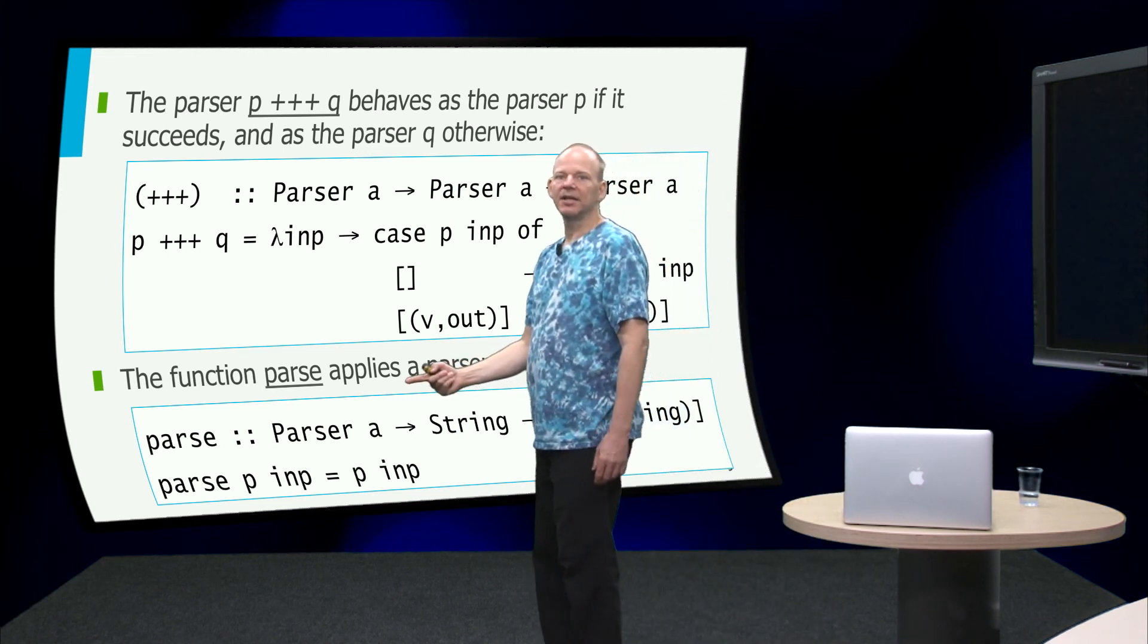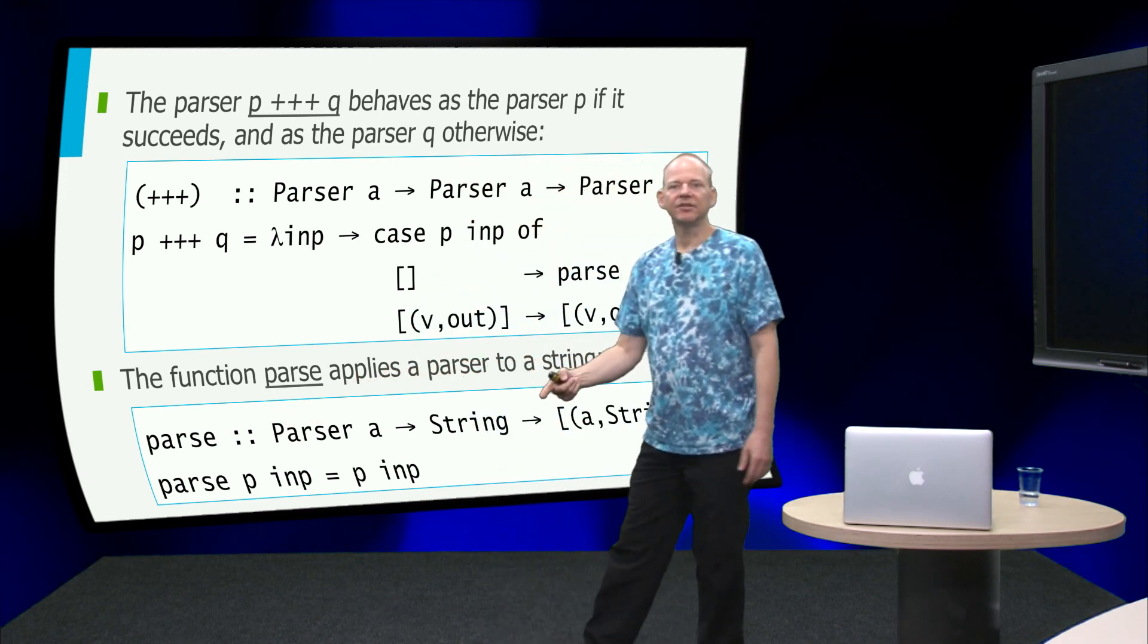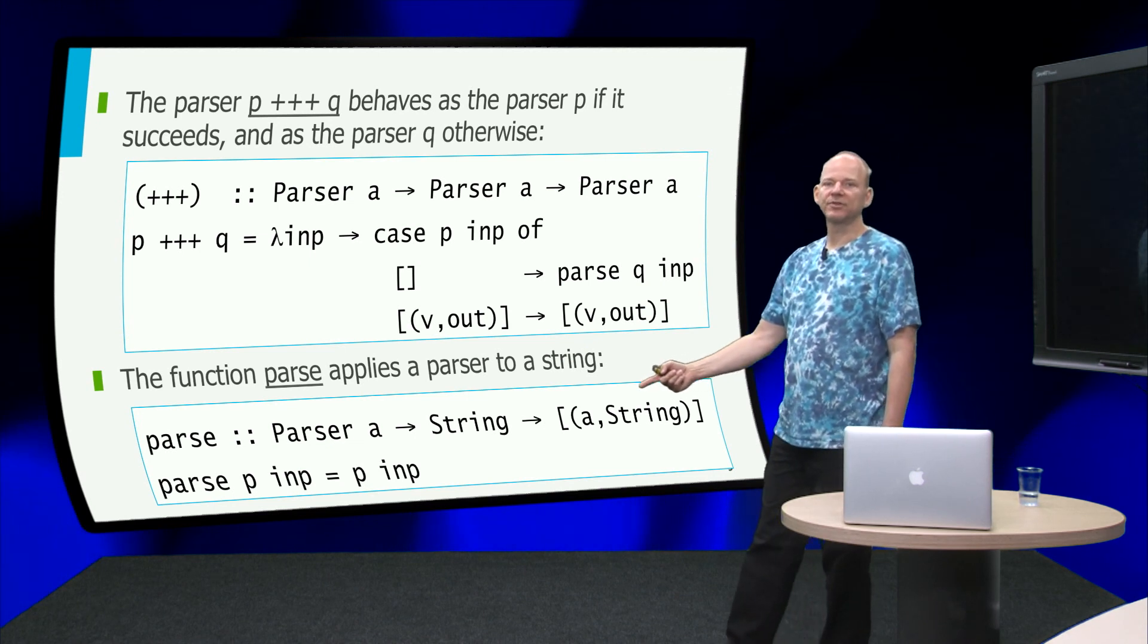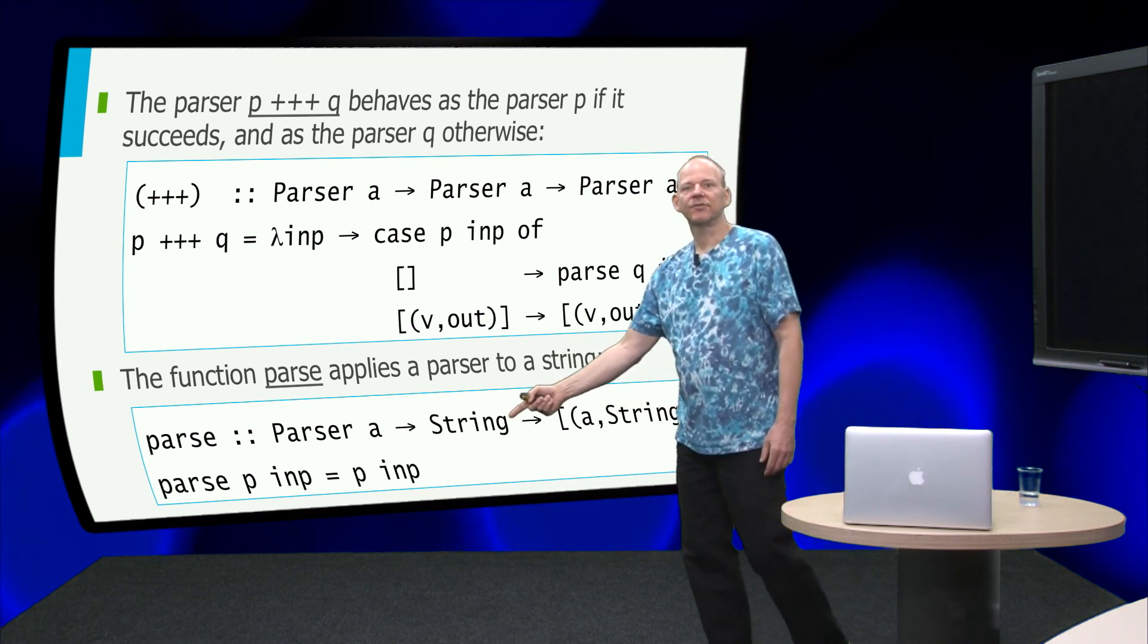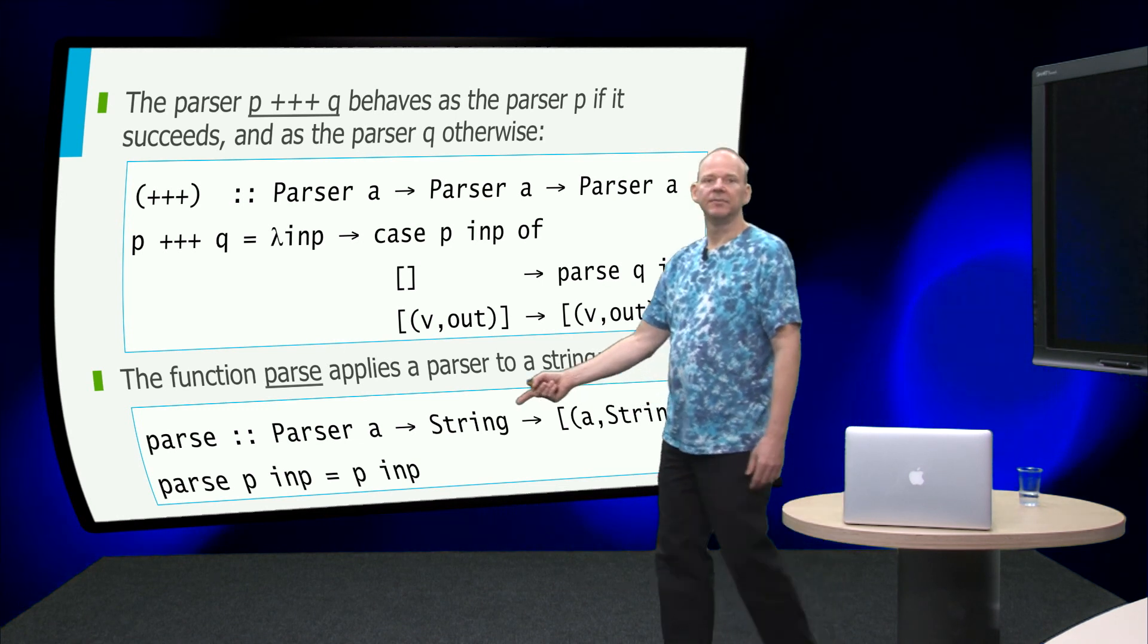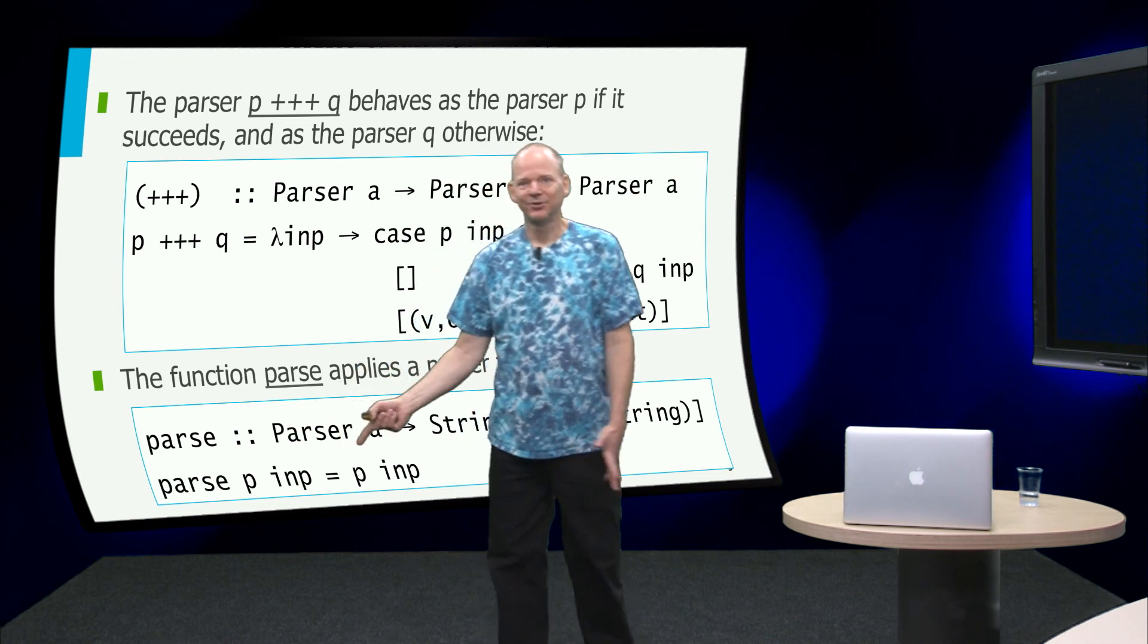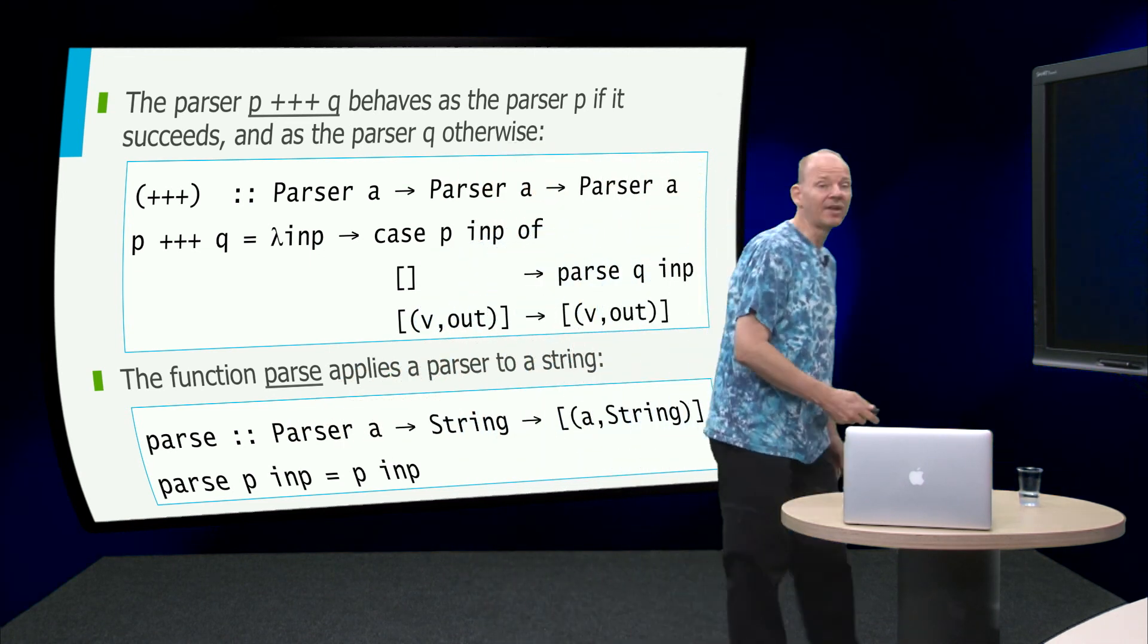And then finally here we want to have a function that takes a parser and a string and then applies that parser to the string. So here we get a function from string to list of a and string. And well, it just applies the parser to the input.